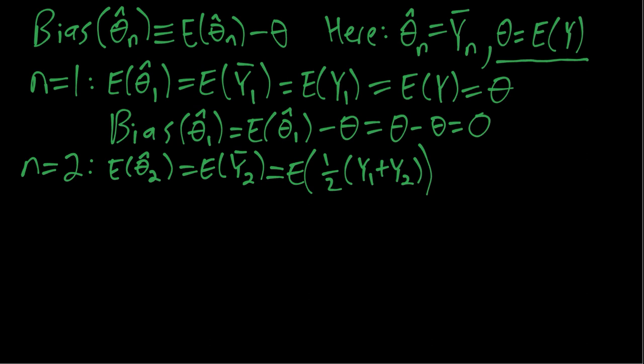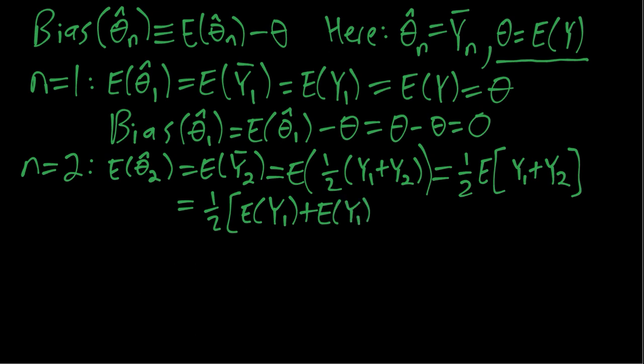Now here we need the linearity property of the expectation operator, which first says we can pull out the constant one half outside the expectation. Don't worry too much if you wouldn't think of this on your own. Y1 plus Y2. And then it also says that the mean of the sum of two random variables is equal to the sum of the means.